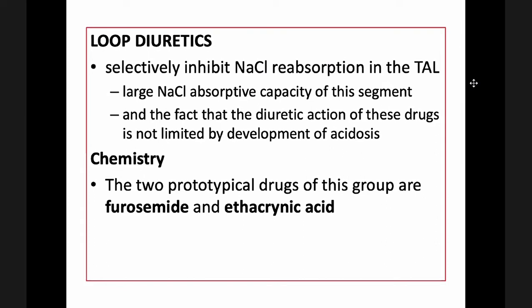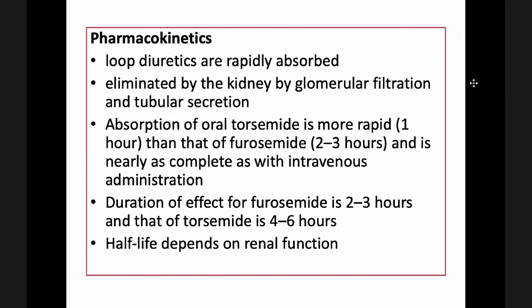Loop diuretics include furosemide and ethacrynic acid. They are rapidly absorbed and eliminated by the kidney via glomerular filtration and tubular secretion. The absorption of oral torsemide is more rapid at one hour than furosemide, which is absorbed over two to three hours, and is nearly as complete as with intravenous administration. The duration of effect for furosemide is two to three hours, whereas torsemide is four to six hours. The half-life depends on the renal function of the patient.